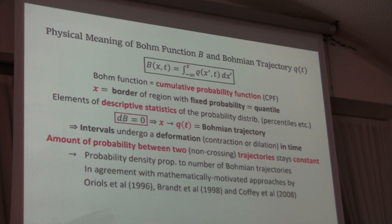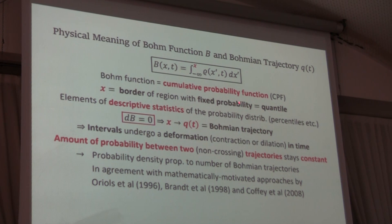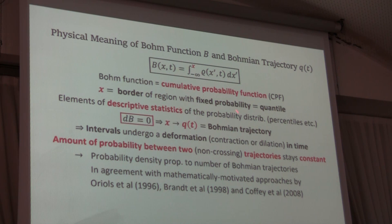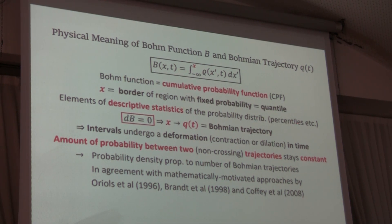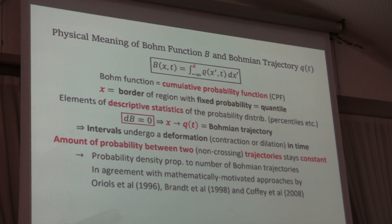This is the definition of this cumulative probability function, and x is now the border of a fixed amount of probability. If we replace x by q of t, the border can be flexible. The amount of probability is constant, but if the border is flexible, we can move it closer to minus infinity — increasing the probability density in that area — or further away, where the density of probability gets smaller.